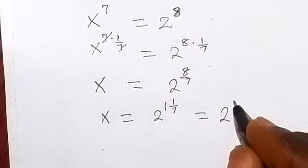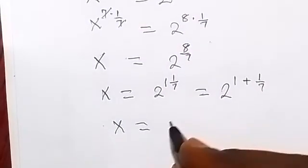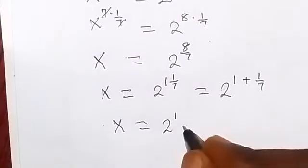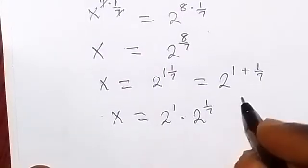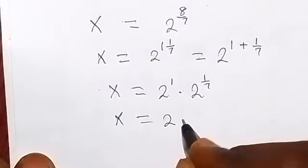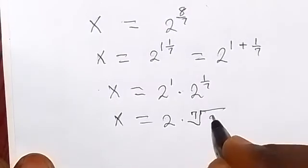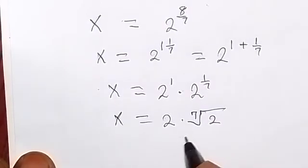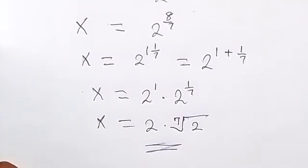This can be written as 2 raised to the power 1 plus 1 over 7, so x equals 2 raised to the power 1 times 2 raised to the power 1 over 7. Therefore x equals 2 times the 7th root of 2. That's our final answer. Thank you for joining us in this class, please subscribe to our channel for more videos.